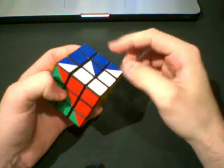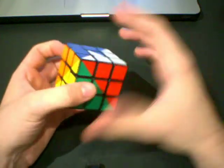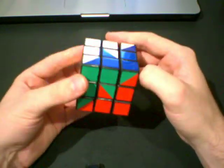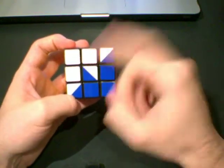So after you've permuted the corners and the edges, you should have your entire thing solved. Now you may have a situation where the center pieces aren't matched up correctly.